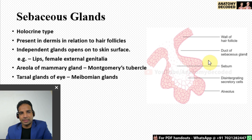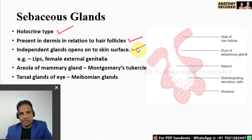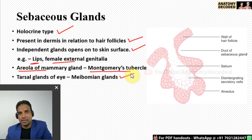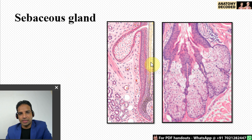Sebaceous glands are holocrine type glands present in the dermis in relation to hair follicles, so their secretion goes through the opening of the hair follicle — they do not have a separate opening on the skin surface. They are more numerous in the lips, female external genitalia, and areola of the mammary gland (where they are called Montgomerie's tubercles). Tarsal glands, also referred to as Meibomian glands, are in the eye. Here we can see the sebaceous gland opening into the hair shaft.